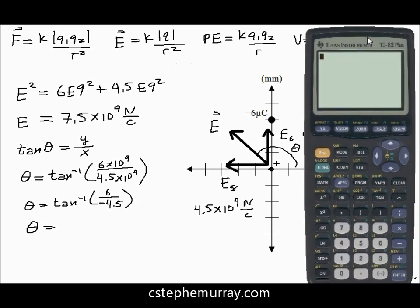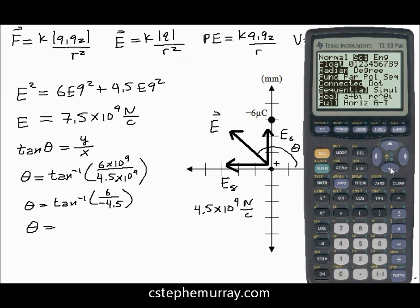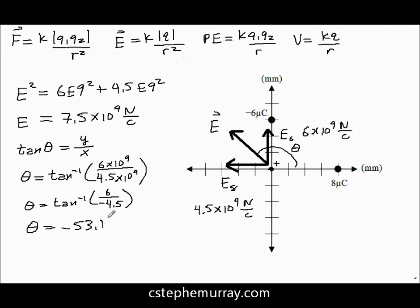Well, theta equals, let's bring out TI again. So, we'll take the inverse tangent of 6 divided by negative 4.5. And that gives me, oh darn, we're in radians. Let me go ahead and move that down. Okay, so let's try this again. Inverse tangent, 6 divided by negative 4.5 equals, and that's times 10 to the 1st, so that's negative 53.1.